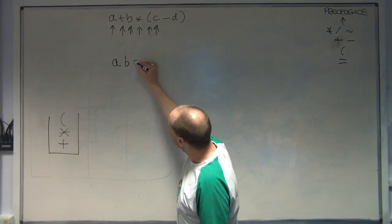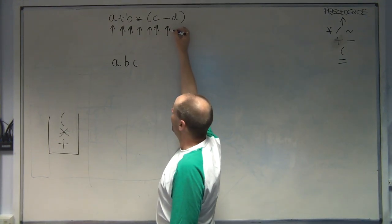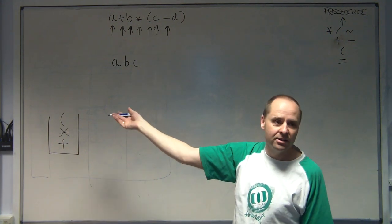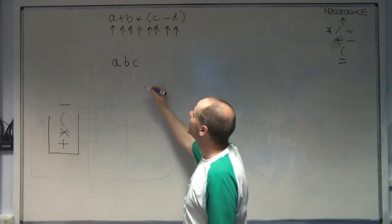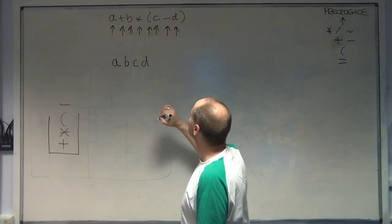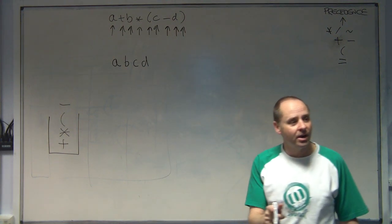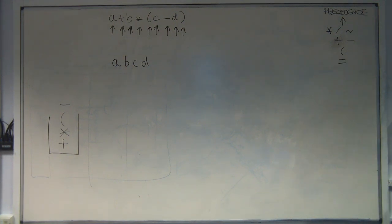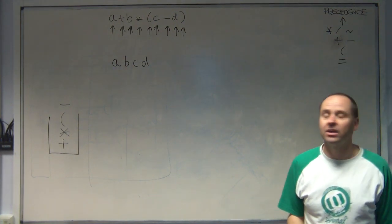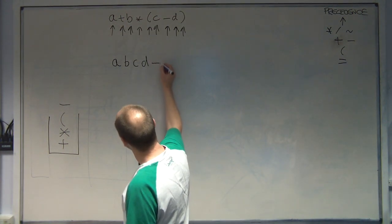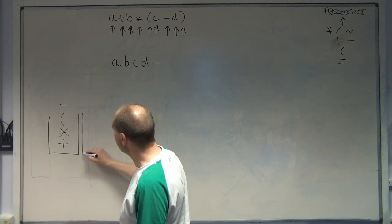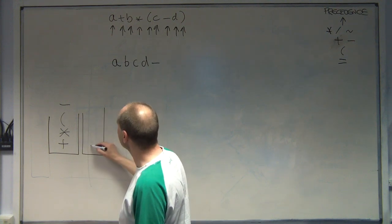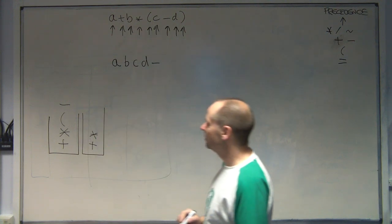Operand, write it down. Operator. Minus is higher precedence than the left bracket, so that comes up on. D is an operand, write it down. Right bracket. Right bracket says empty the stack. Don't think, just empty the stack up to the left bracket and then throw the left bracket away. So we're going to empty the stack. And we want to throw away that left bracket. So I'm going to rewrite this stack out to show what's currently in it.